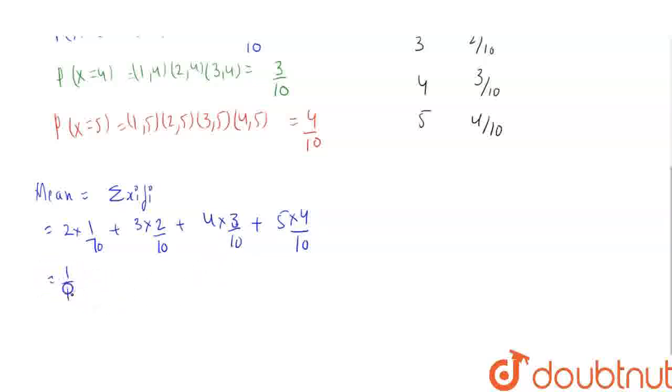Taking 1 by 10 common leaves us 2 plus 6 plus 12 plus 20, which is 40. So, mean of this is 4.